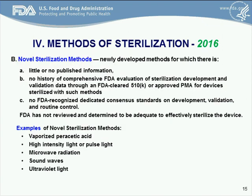The third category is novel sterilization methods. These are newly developed methods for which there is little or no published information, no history of comprehensive FDA evaluation of sterilization development and validation data through an FDA clearance or PMA approval, and no FDA recognized dedicated consensus standards on development, validation, and routine control. Examples of these include vaporized peracetic acid, high-intensity light or pulse light, microwave radiation, sound waves, and ultraviolet light.